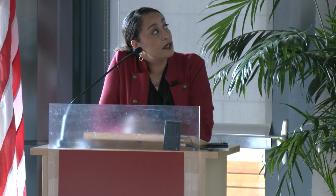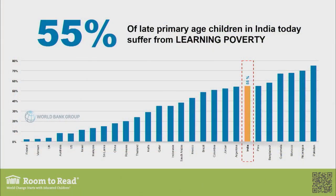Since this conference is about the Indian economy, if we look at India more closely at foundational literacy, we find 55% of late primary age children suffering from learning poverty. Looking at the COVID pandemic years, estimates suggest 92% of children were losing some reading ability during that period. So we've reversed some of our progress and have a lot to catch up on.